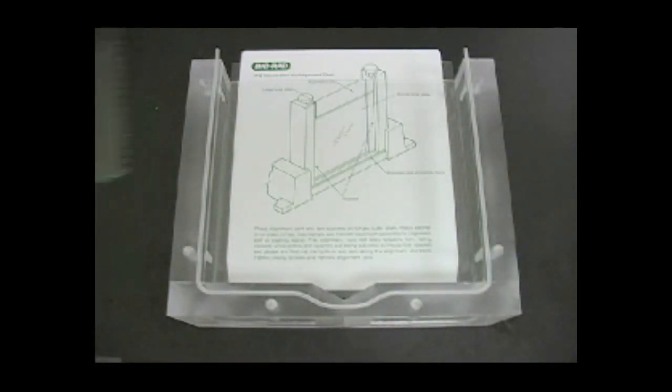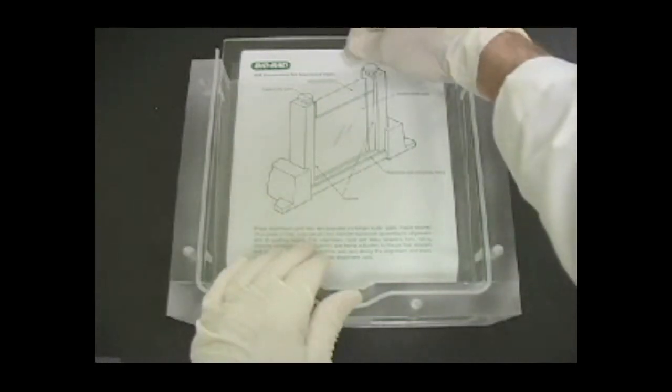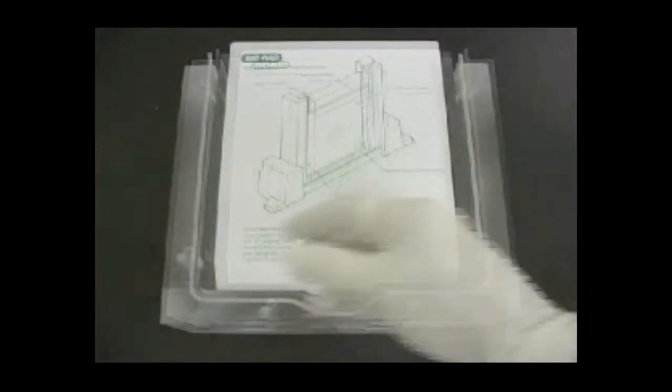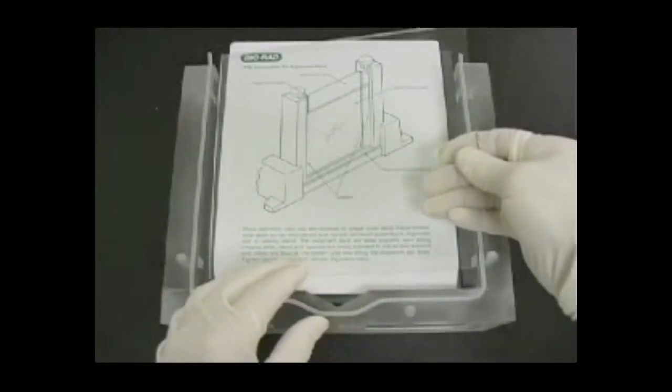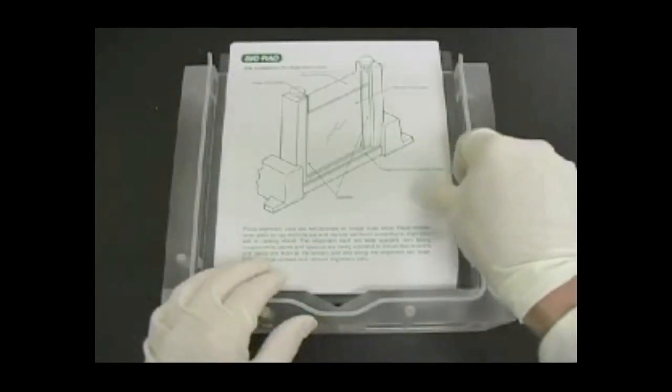Continue to place pieces in the same order: long outer plate, spacers, alignment card, short inner plate, and separation sheet.